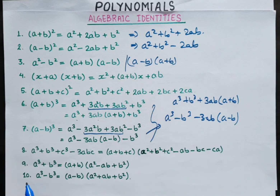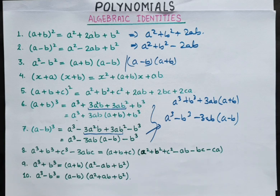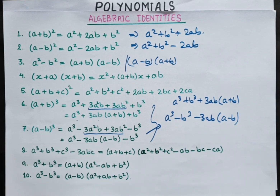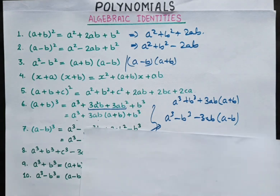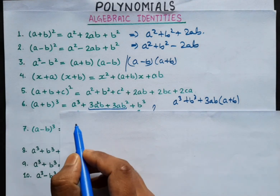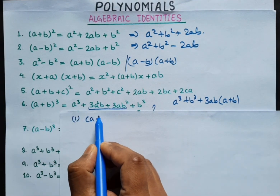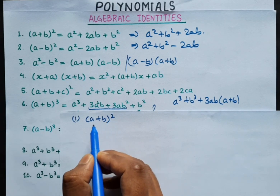And last, identity number 10: a cubed minus b cubed is equal to (a - b) in one bracket, and (a squared plus ab plus b squared) in another bracket. Okay? So, I have to verify number 1. I have to keep the identity of (a + b) whole square.